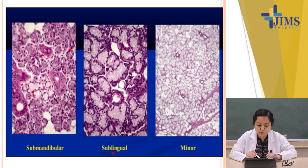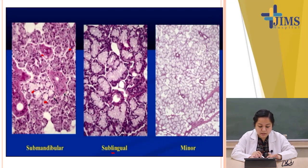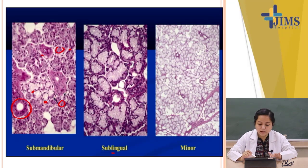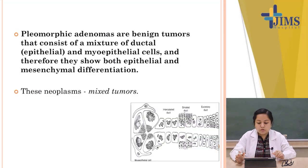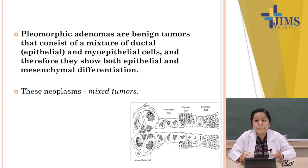The sublingual gland is mostly mucous. Comparing submandibular and sublingual, submandibular has both mucous and serous while sublingual is predominantly mucous. Minor salivary glands are also mostly made up of mucous cells, seen as the vacant-looking cells.